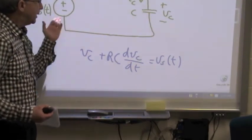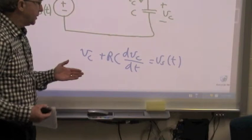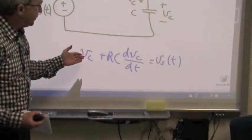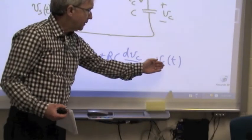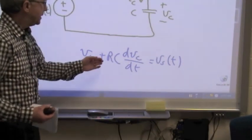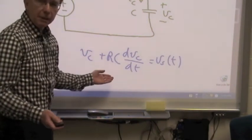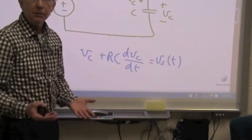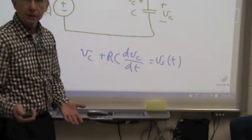If we set up an RL circuit with a current source, we'd have a very similar expression here, except we'd have I sub L that we'd solve for, we'd have a current source, and instead of R times C, we would have L over R. So the solution method will apply either to RC or to RL circuits.